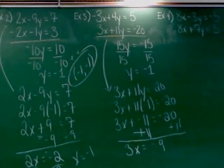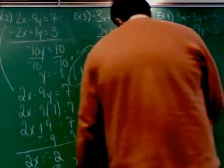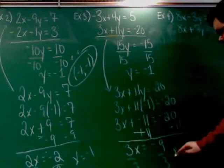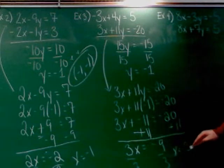So I do that and I get 3 X equals negative 9. And now I have to divide each side by what? 3. Good. And I divide across by 3, and I get X equals negative 3.